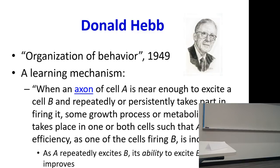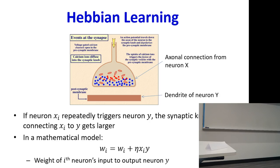They also didn't provide a mechanism whereby the network could learn how to perform its operations. The first real proposal on how a network could learn came from Donald Hebb, in this book called 'Organization of Behavior,' where he basically said that if I have two neurons which are connected, every time the two fire together, the connection is going to get stronger.